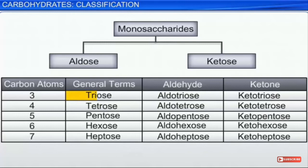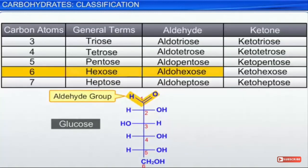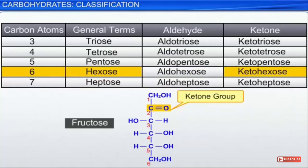According to the number of carbons, we have tri, tetra, penta, hexa, hepta, and the suffix '-ose' is added. The name also depends on whether an aldehyde or ketone group is present. For example, if we have six carbons it is a hexose; if it has an aldehyde group it is an aldohexose, and if it has a ketone group it is a ketohexose.